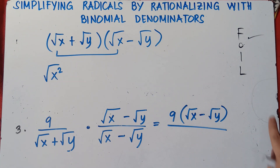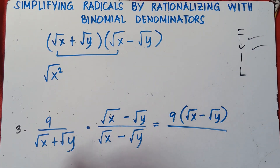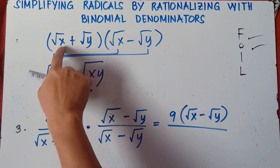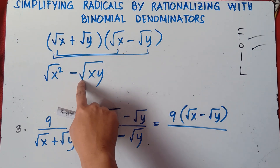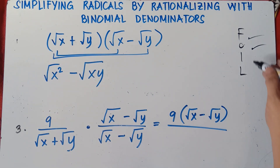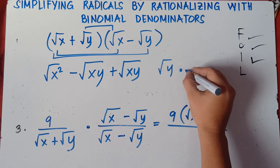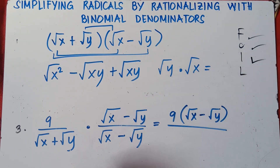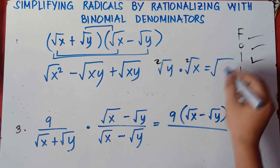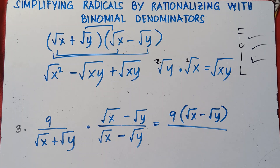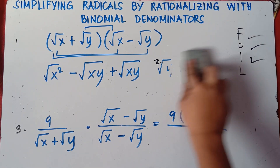Outer: square root of x times negative square root of y — positive times negative gives negative square root of xy. Inner: positive square root of y times positive square root of x — that's positive square root of xy. In algebra, we arrange alphabetically, so it's xy.